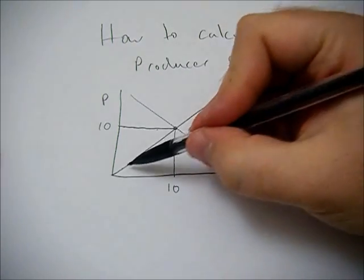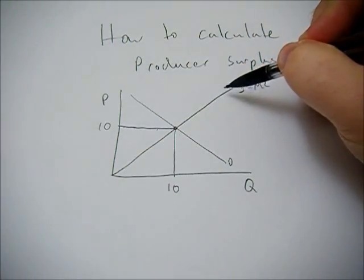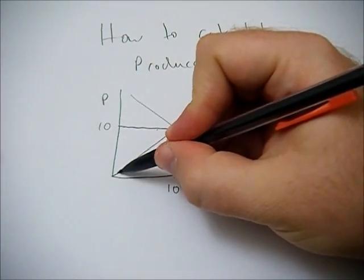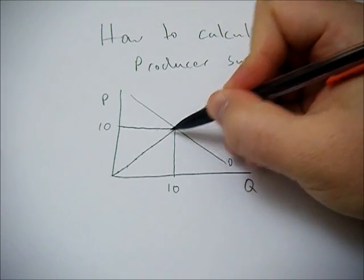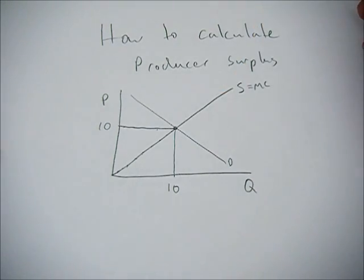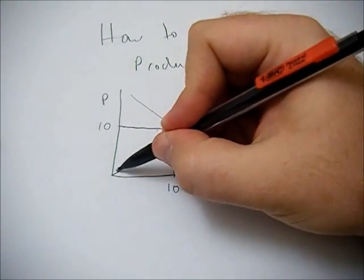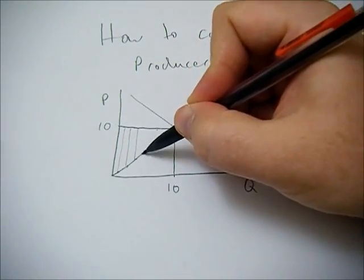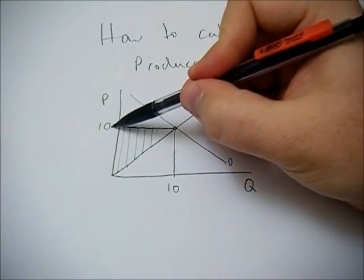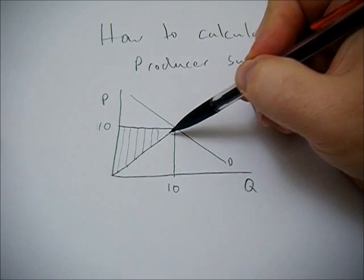However, because the supply curve is upward sloping, they would be willing to supply or sell those goods at these lower prices going up to our equilibrium value. So the difference between the amount they're willing to sell it for and the amount they actually receive is surplus.